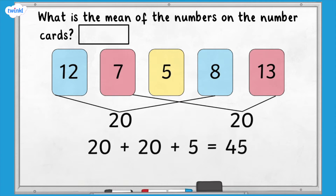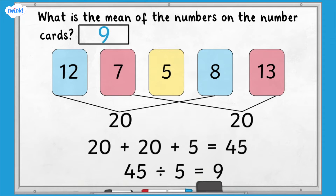Finally we divide 45 by the number of items, which is 5. 45 divided by 5 equals 9. So the mean of the numbers on the number cards is 9.